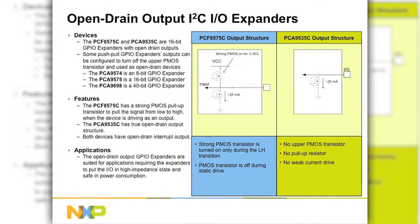To drive a static high, both devices rely on an external pull-up resistor. Additionally, the PCA9574, 9575, and 9698 are 8-bit, 16-bit, and 40-bit totem pole GPIO expanders that can be configured to turn off the upper PMOS transistor and use in open drain devices.